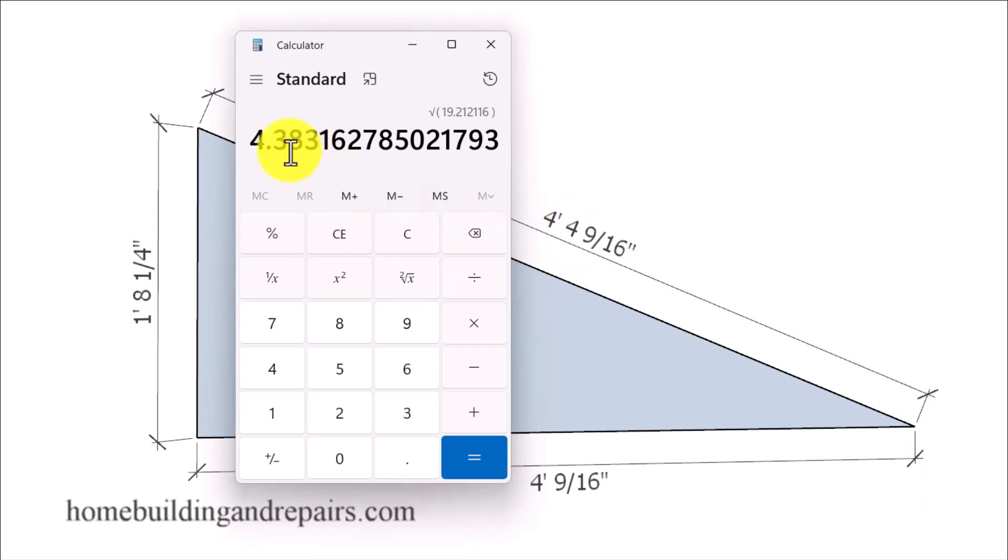So to figure this out in inches I'm simply going to multiply this number times 12. And that's going to give me 52.59 inches, or just a little bit over 4 foot 4 and 9 sixteenths of an inch. And that's how we calculate this number.